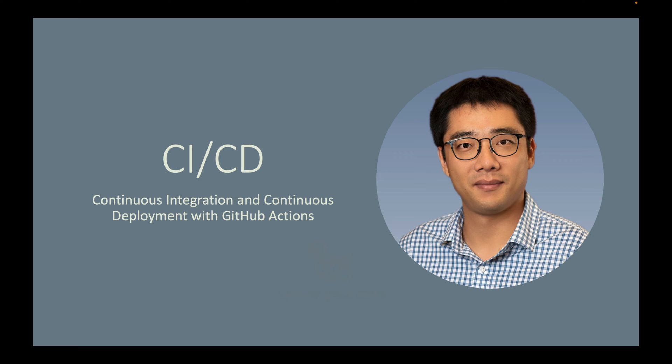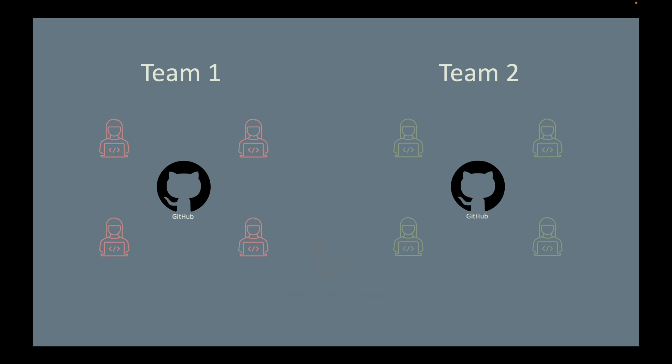So what is CI/CD and why do we need it? Assume two different teams are working on two software projects. Each developer takes a copy of the current code from the central repository. In Team One, the project is decomposed into several large features, so everyone is assigned a large feature which takes a long time to complete and test. For Team Two, the team carefully splits the project into many small features, each of which takes less time to complete and test.